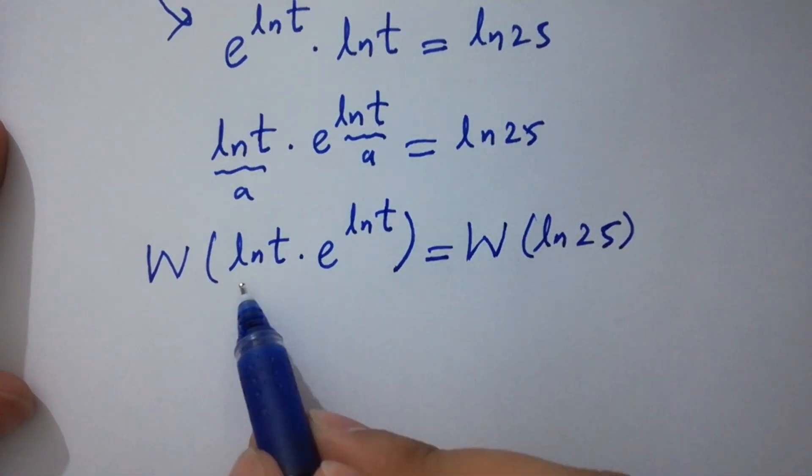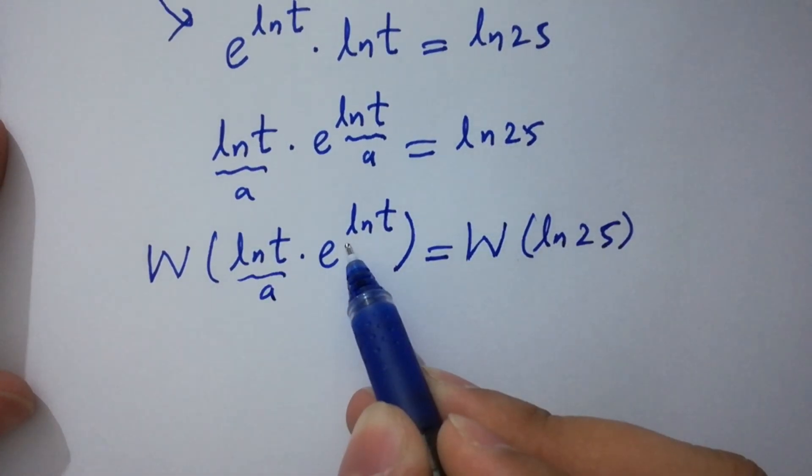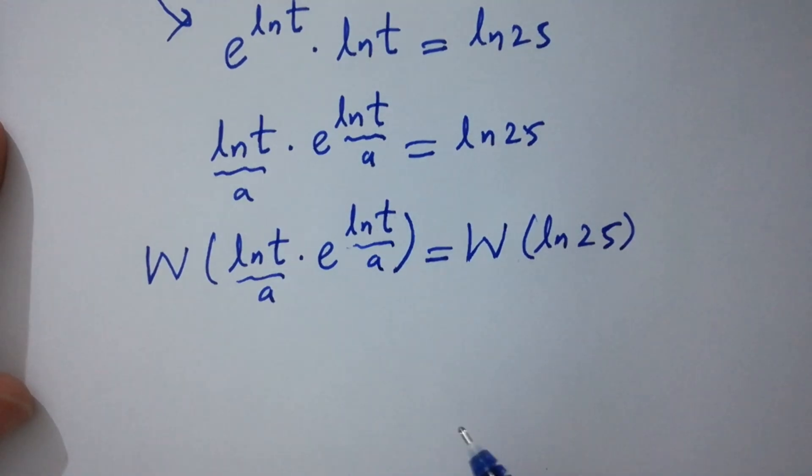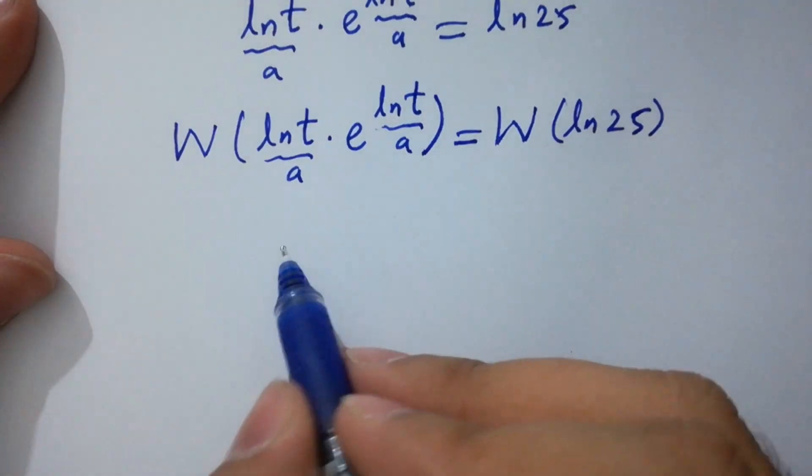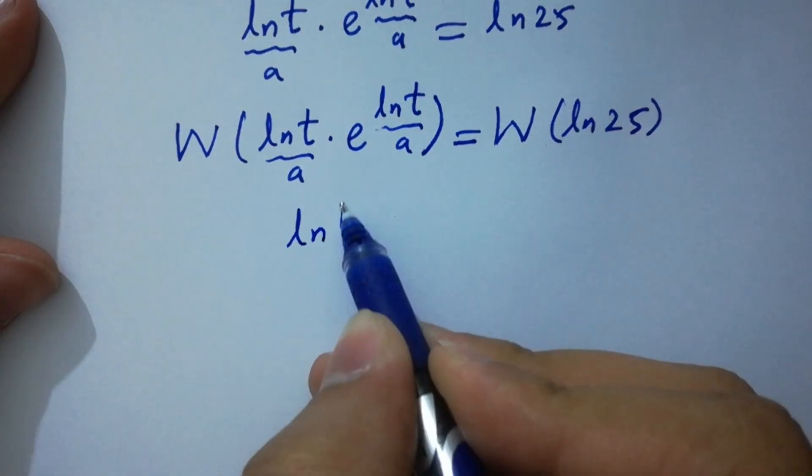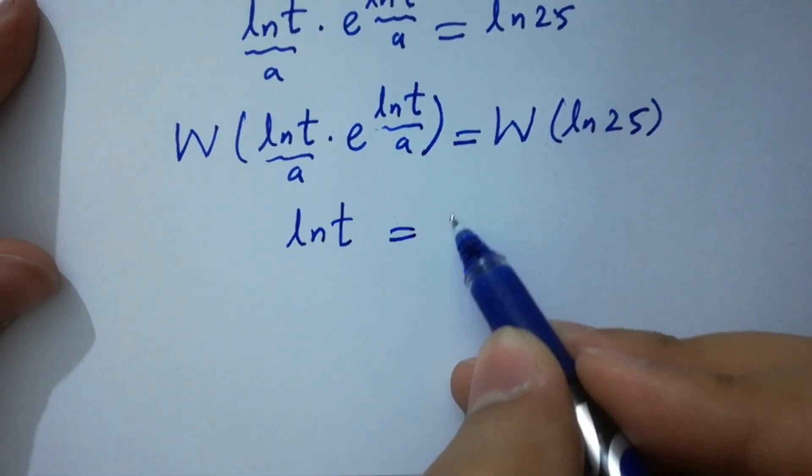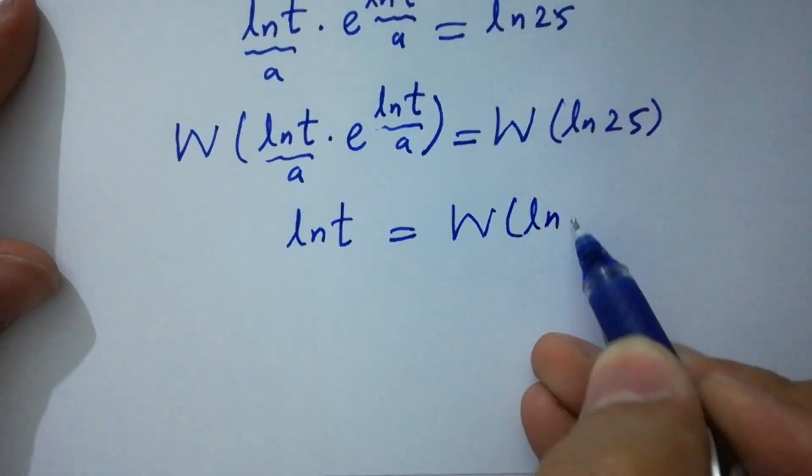So here W of a times e to the power a will be equal to a. So we have here ln t equal to W of ln 25 as it is.